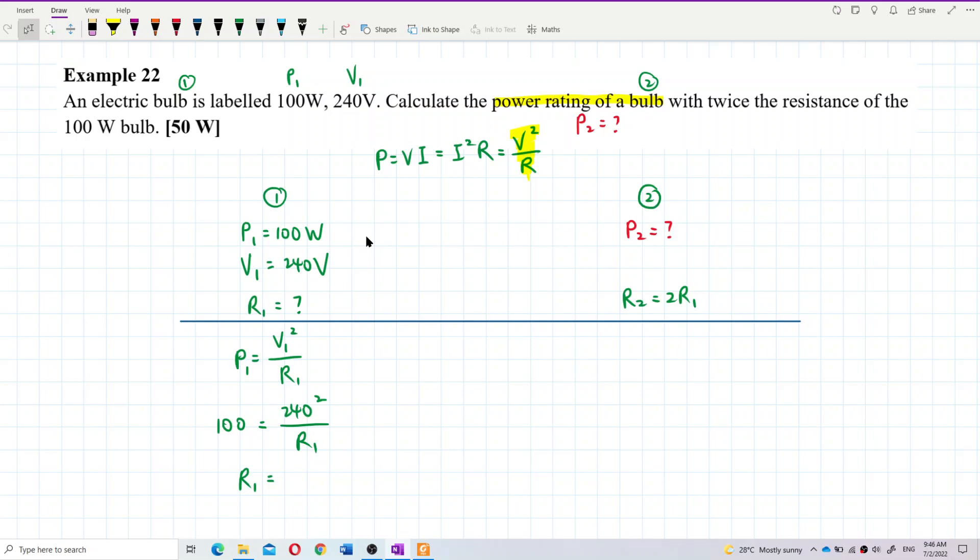Resistance 1 is 576 ohms. I got the resistance already. So this one will be multiply by 2, so resistance 2 is 1152 ohms.